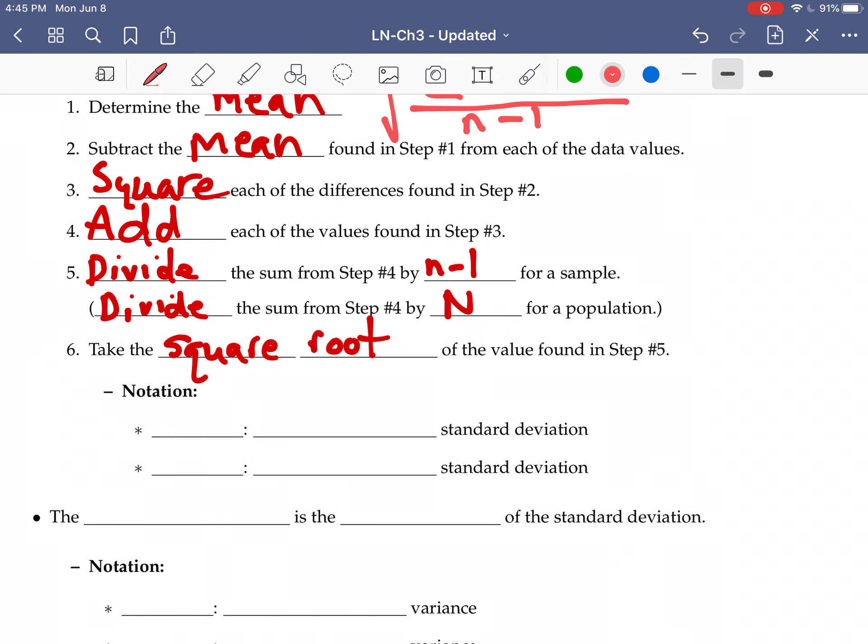Notationally, for a population, we use the Greek letter sigma for a population standard deviation. And we use the letter S for a sample standard deviation.